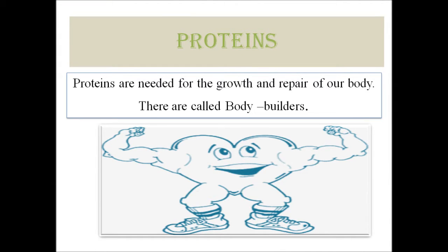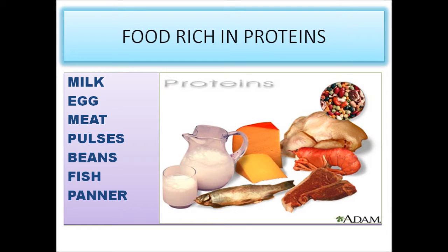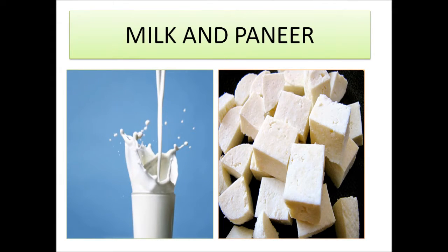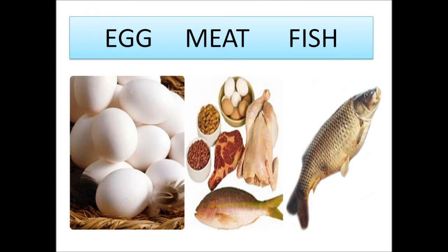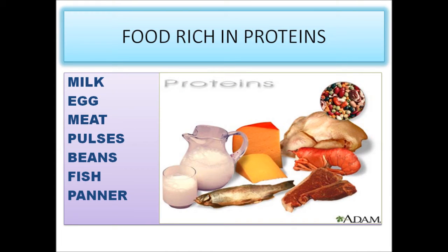Proteins help us to grow and to build and repair worn-out cells in our body. Proteins also help in healing small wounds and cuts. So they are called body-building foods. Examples of protein-rich foods include milk, egg, meat, pulses, beans, fish, and paneer.